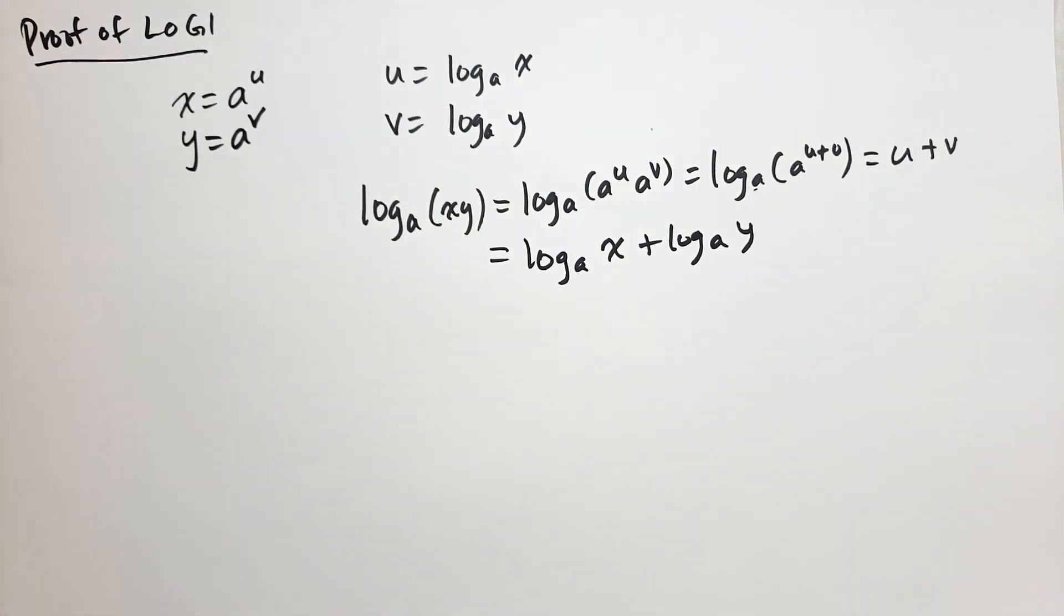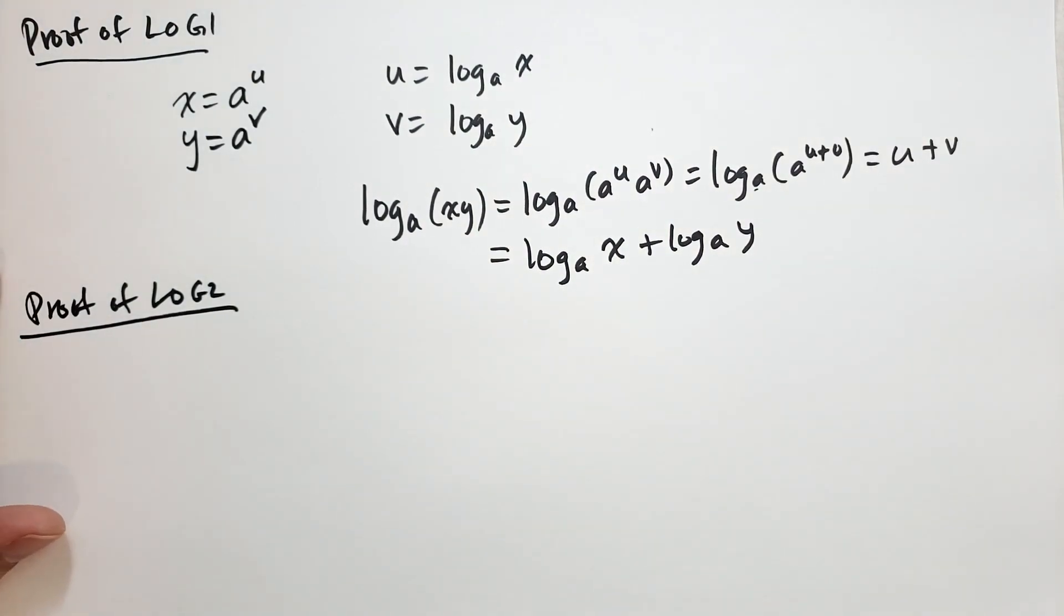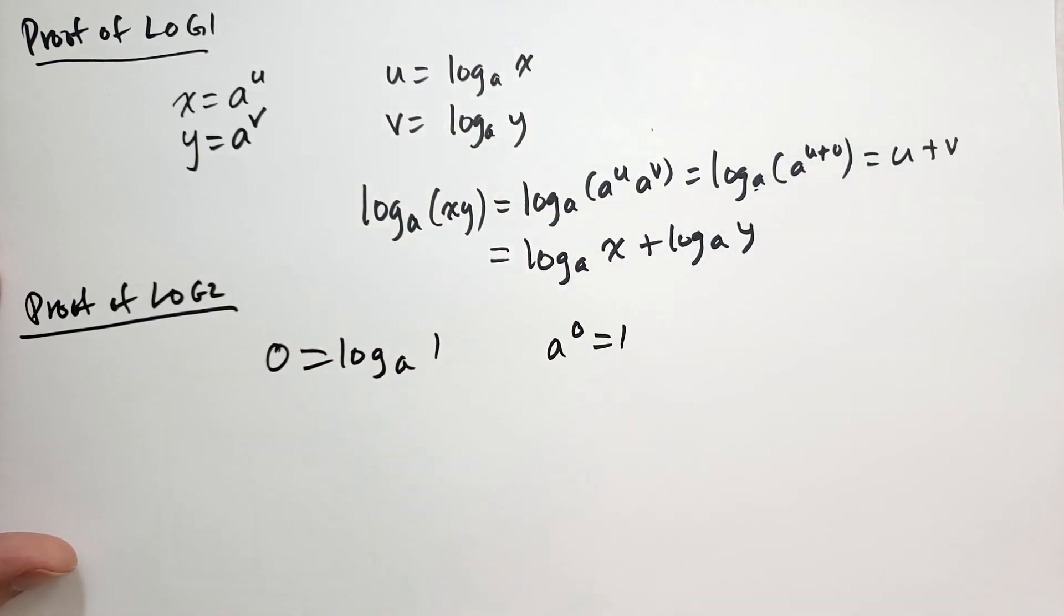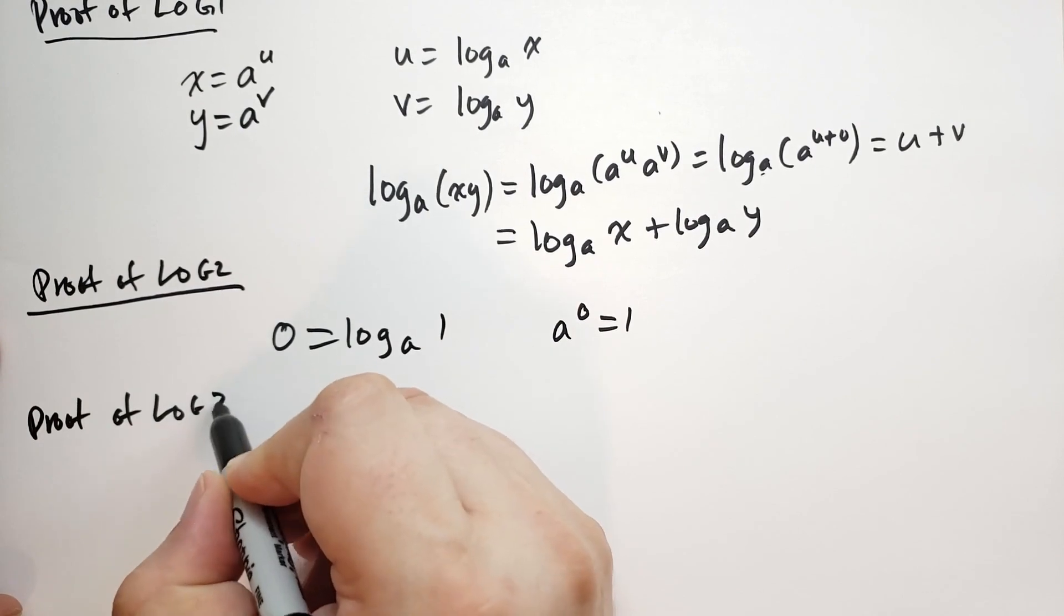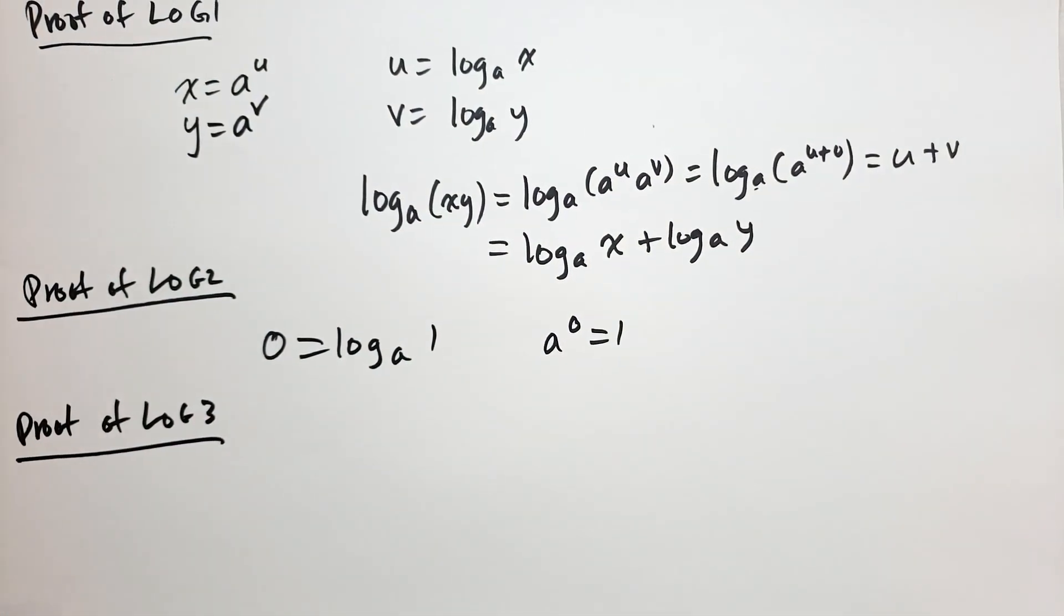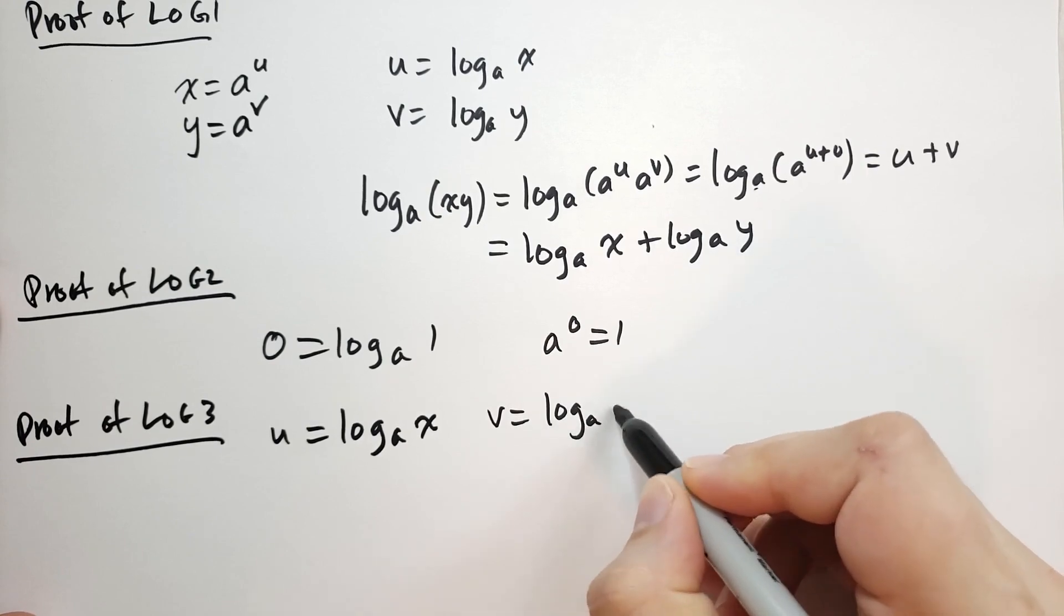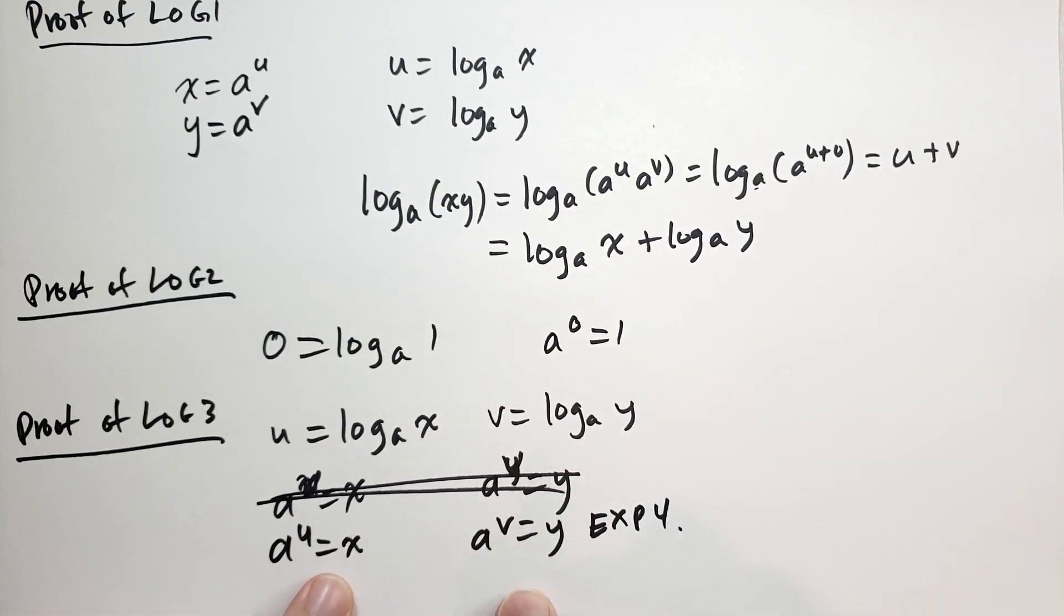If we wanted to prove log 2, basically requires only one step. We say 0 is equal to log base a of 1, while a raised to the 0 is equal to 1. So that's pretty straightforward to prove that. For the proof of log 3, we'll say u equals log base a of x and v equals log base a of y. We have a to the u is equal to x and a to the v is equal to y. And because of exp 4 from the previous section, we know that when the numbers, if this u is smaller than that v, then x must be smaller than y.